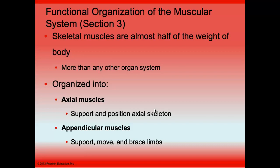This is a different section. Skeletal muscles make up almost half our weight, and like the bones, they are separated into axial muscles and appendicular muscles. Axial muscles support and position the axial skeleton, while appendicular muscles support, move, and brace our limbs.